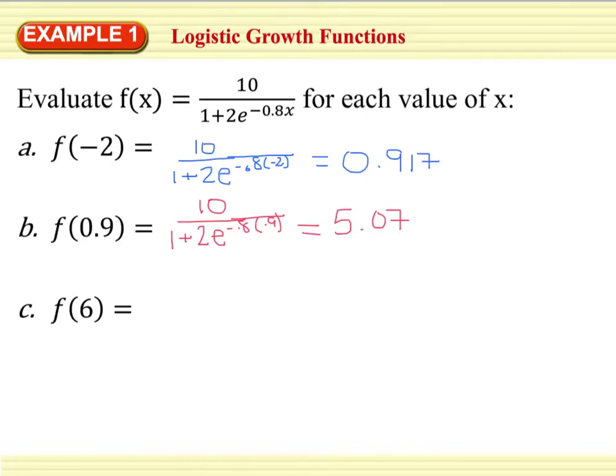Now when we go to evaluate our function at f of 6, we're going to end up with 10 divided by 1 plus 2e to the negative 0.8 times 6. And if you've typed this in correctly, you should end up with something around 9.84. So again, by jumping from 0.9 to 6, we have jumped from 5.07 to 9.84.